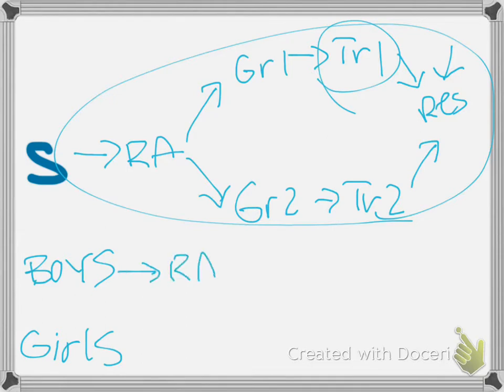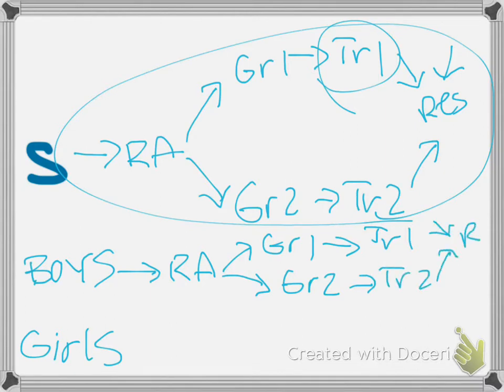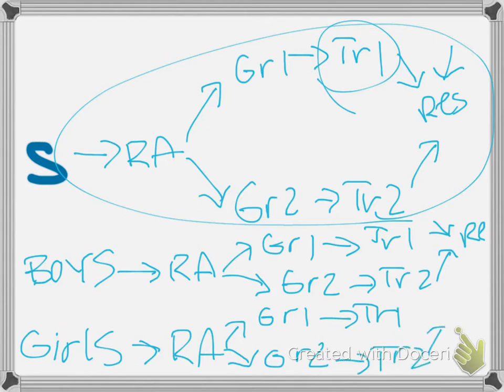So we have our random assignment. We go to group one. We go to group two. We take treatment one. We take treatment two. And then we measure the response. We do the same thing again for the girls. Random assignment. Group one. Group two. Treatment one. Treatment two. Measure the response.